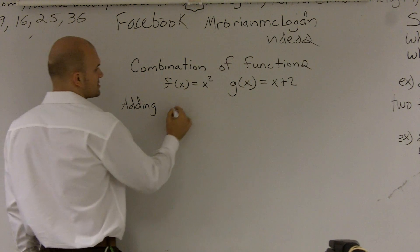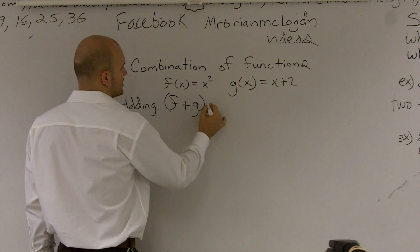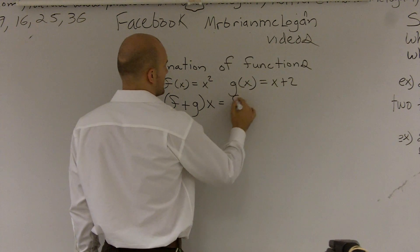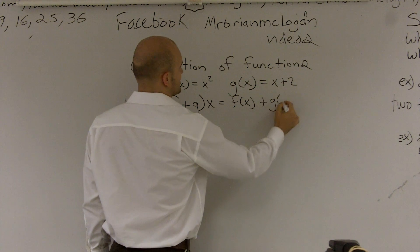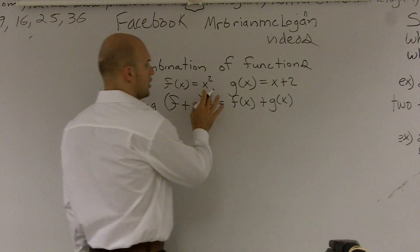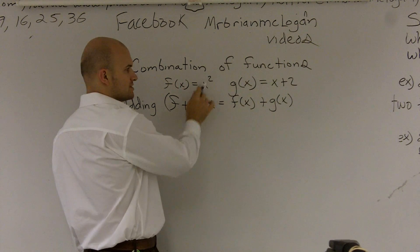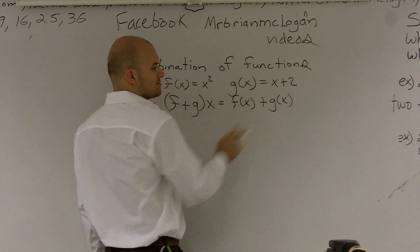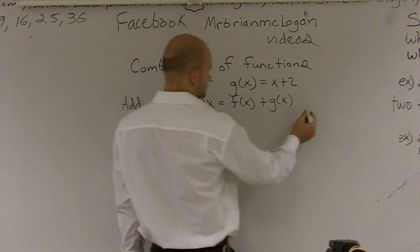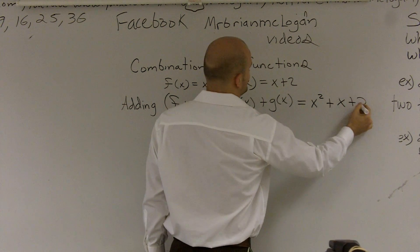So if I want to add two functions, a lot of times it's written like this, f plus g of x. Well, what that really means is f of x plus g of x. So on this example, all I'm really going to do is substitute what my value of f of x is, which is x squared, and then I'm going to add it to my value of g of x, which is x plus 2. So that equals x squared plus x plus 2.